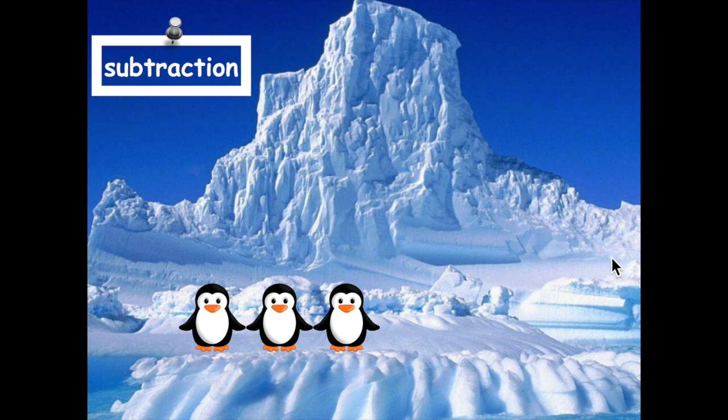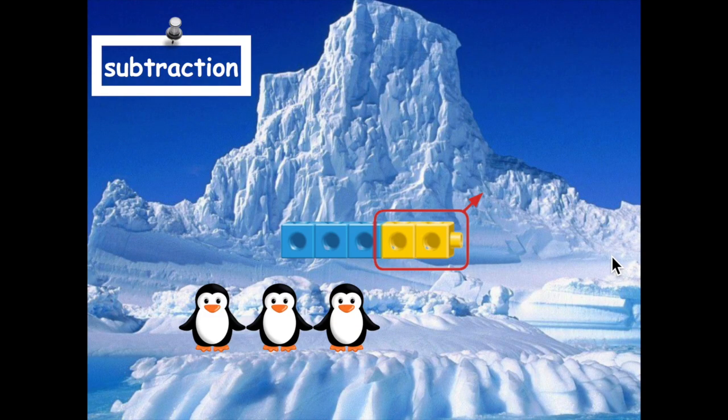I could show this same problem with unifix cubes. In this picture, it shows that I had five cubes, just like I started with five penguins. Then, two of the cubes are being taken away. That's why the arrow is being pointed away from the group. Now, there would be three cubes left. This could also be written as an equation. Five minus two equals three.